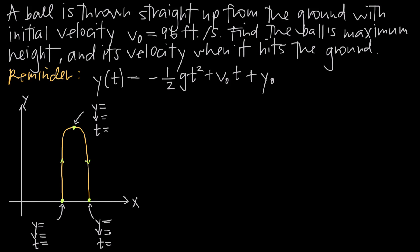We'll use what we've been given to find the missing pieces. The ball is thrown from the ground, so its initial position — its initial height — is zero. And since the ball comes back down and hits the ground, its height at the end of its flight is also zero. We know it's thrown upward with an initial velocity of 96 feet per second, so velocity at the beginning is 96. This is the very beginning of the ball's flight, so we call that time equals zero.